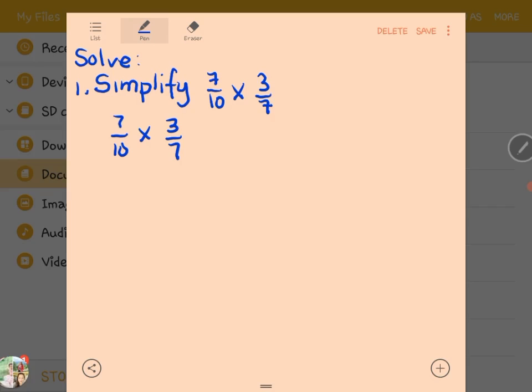So first, we have to apply the cancellation method. We have to cancel the two 7s. So I will use 7 to divide. 7 divided by 7 is 1, and 7 divided by 7 is 1.